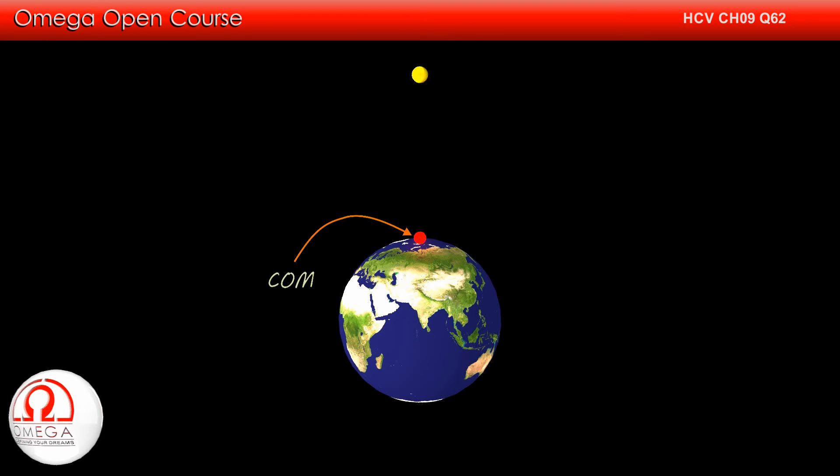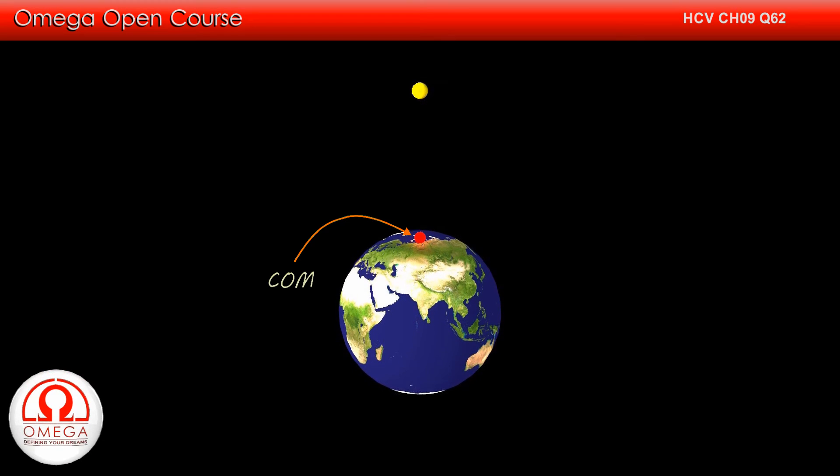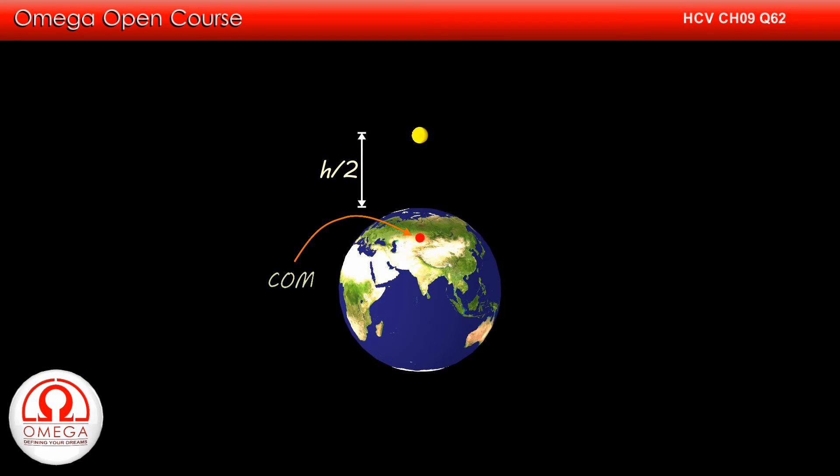So as the block moves down to gain some speed in downward direction, the earth moves up and gains some velocity in upward direction such that the momentum of the earth-block system is conserved. The kinetic energy for both the block and the earth comes from the decrease in the gravitational potential energy of the earth-block system.